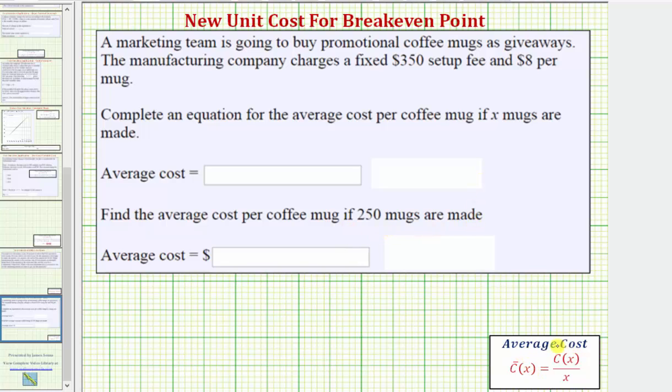The average cost function c̄(x) is equal to C(x) divided by x. So to find the average cost we find the total cost C(x) and divide by x, the number of items created or made.